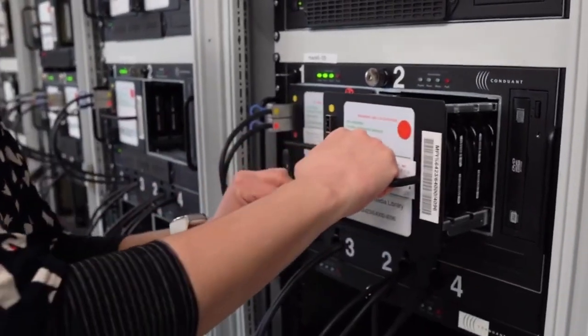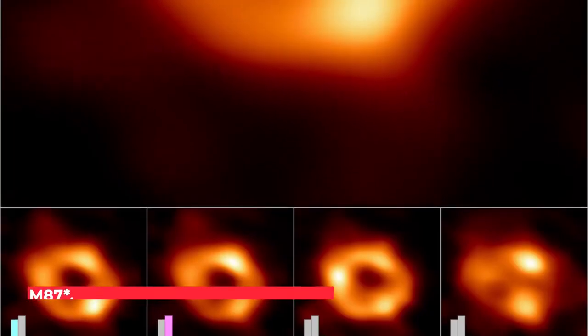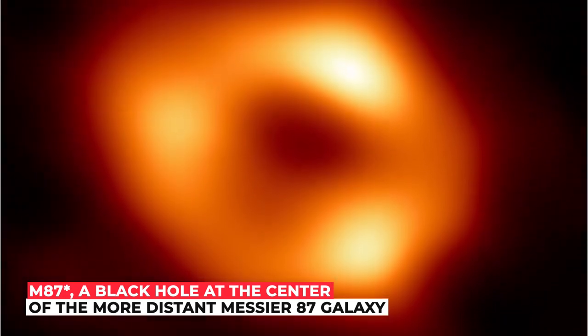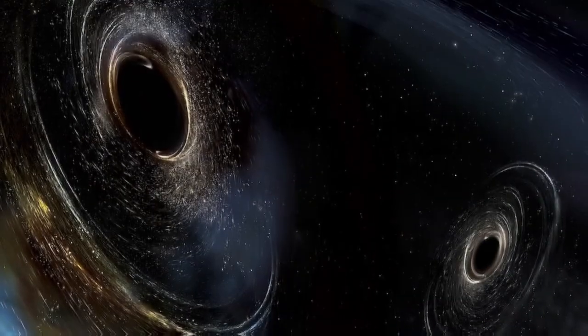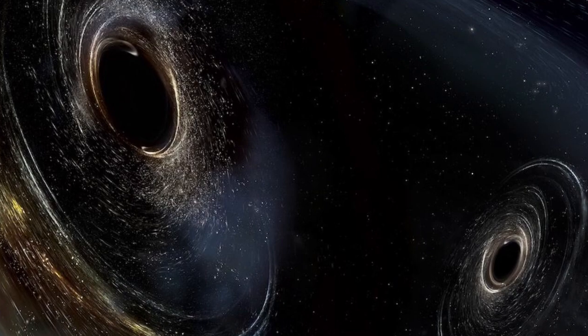The discovery comes on the heels of the EHT collaboration's 2019 release of the image of M87*, a black hole at the center of the more distant Messier 87 galaxy. The two black holes appear strikingly similar, although our galaxy's black hole is thousands of times smaller and less massive than M87*.